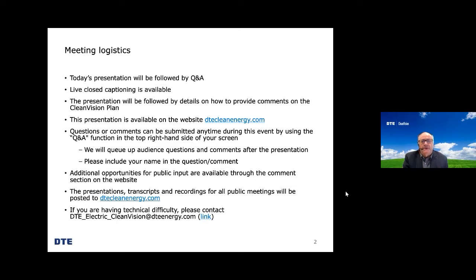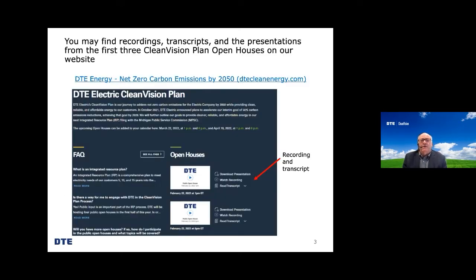In January, we hosted our first public open house. The second open house was held in February and the third in March. The recordings, presentations and transcripts can be found at dtecleanenergy.com in the Clean Vision Plan section of the website. On the right side, you'll see an area called Open Houses, where we post the content for all public open houses after they occur.